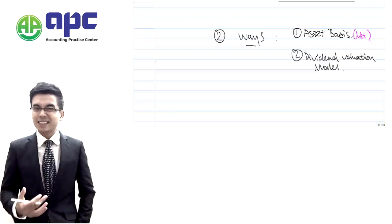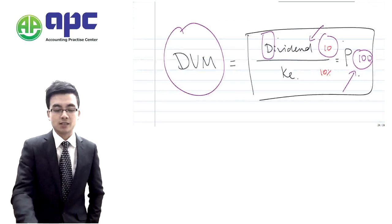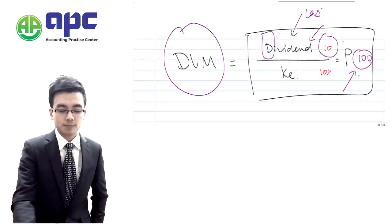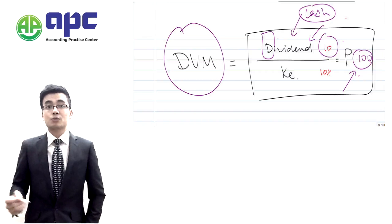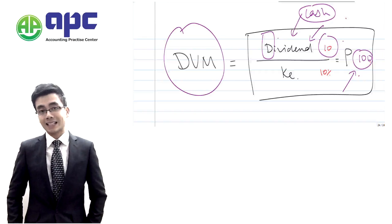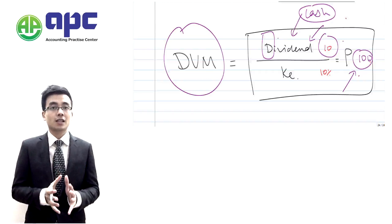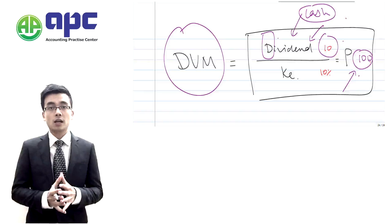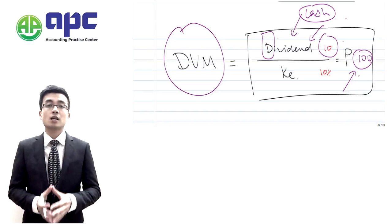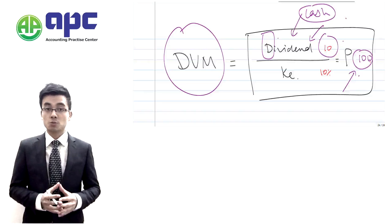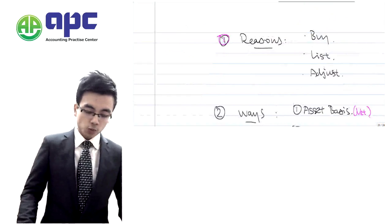One final point about the DVM: the dividend is a cash item. It is not subject to manipulation by accounting policy. So to some extent this is a cash flow approach to valuing a business using a perpetuity formula, from a small shareholder's perspective.